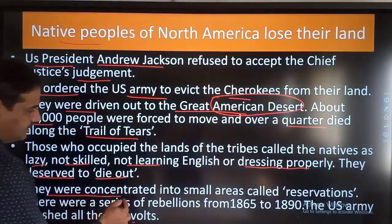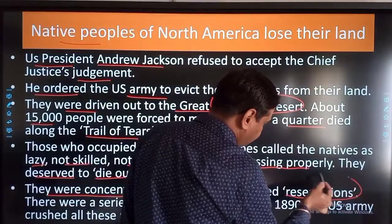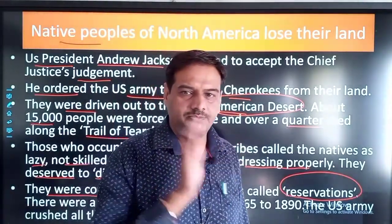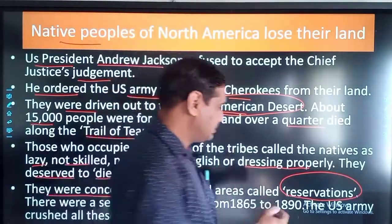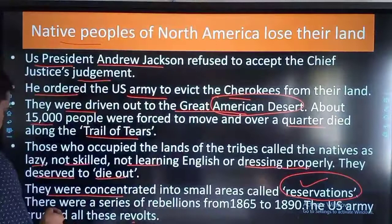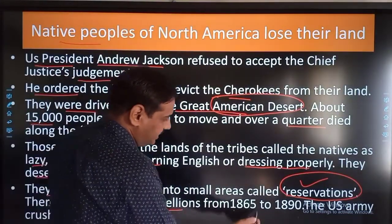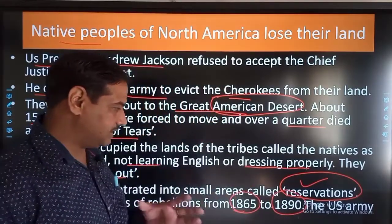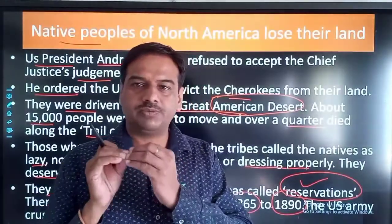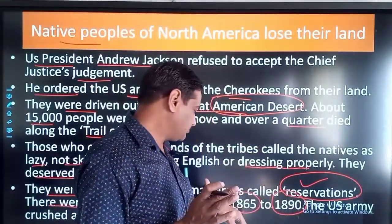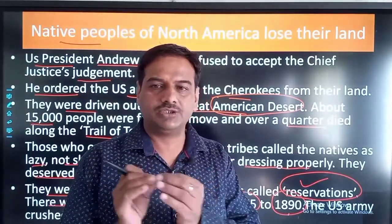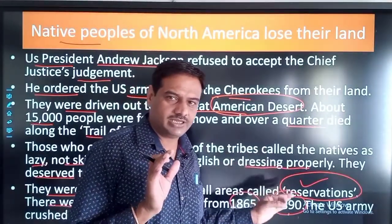They were concentrated into small areas called reservations, segregated from areas occupied by white people. These reserved areas were meant for native peoples only. There were a series of rebellions from 1865 to 1890, as many people were forced to remain in these small reservations. They rose against the US government's decision but since they were not having modern weapons, they were suppressed brutally by the US Army.